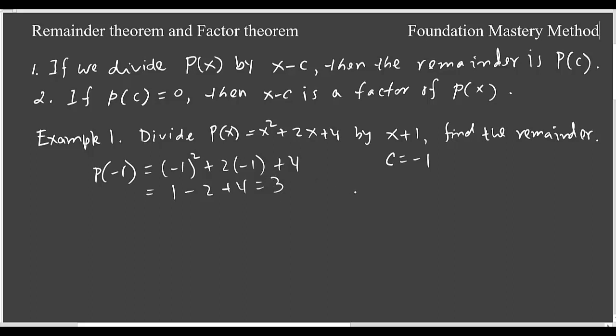Now let us use synthetic division to verify that the remainder is 3. We have all the terms present, so you write 1, 2, 4. We are using synthetic division, so my c is -1. Plug it here, pull your 1, multiply with -1, and then again multiply and add. This is 3, so we understand that this 3 is my remainder exactly.